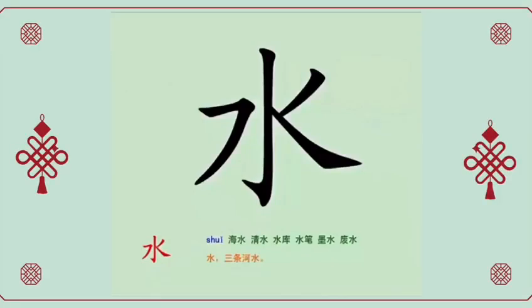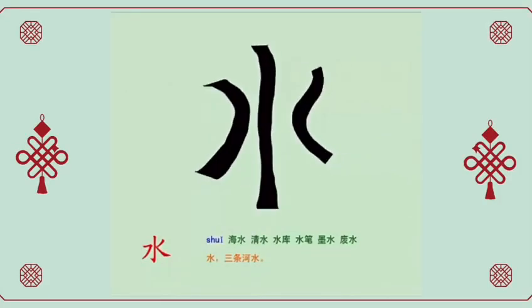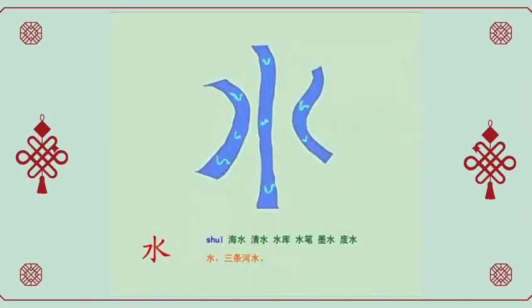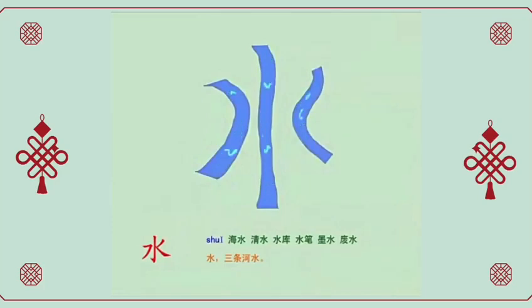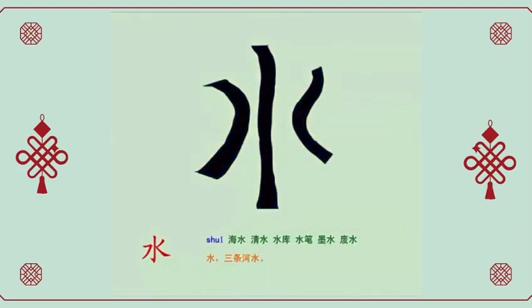水, water. The writing looks like three rivers. 海水, ocean water. 清水, clear water. 飞水, dream water.